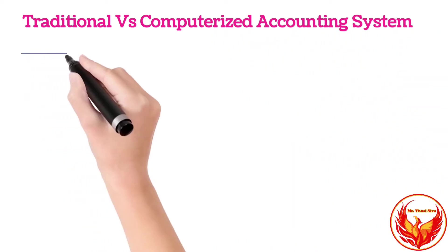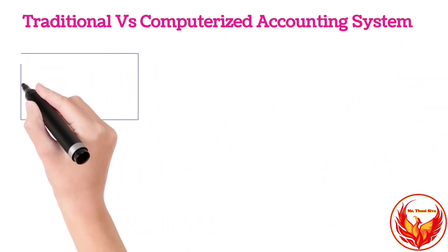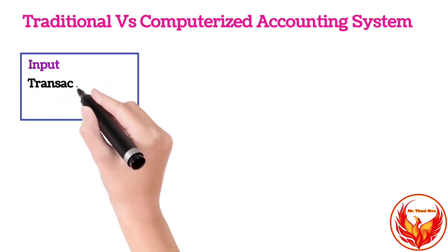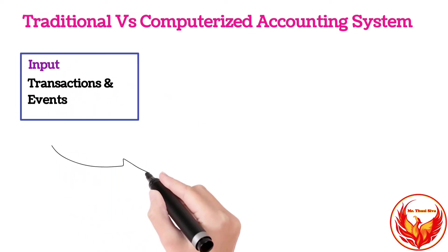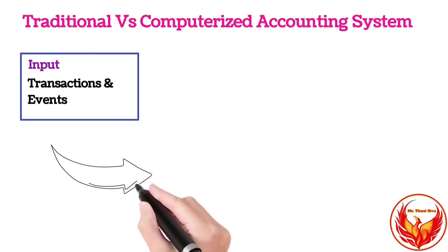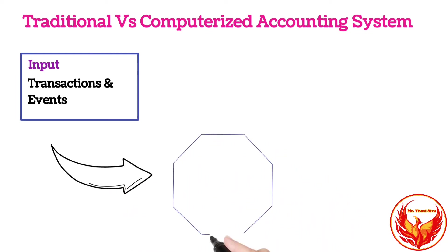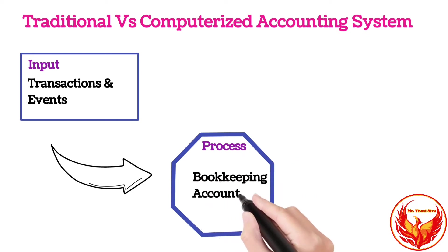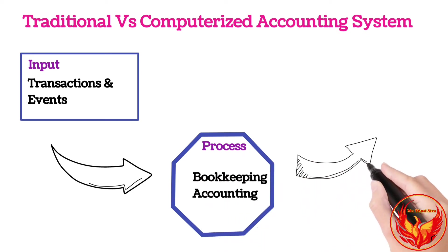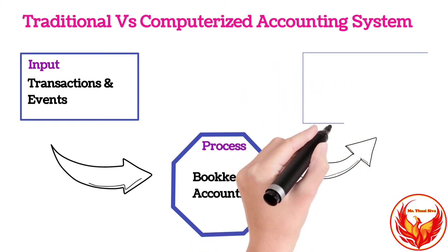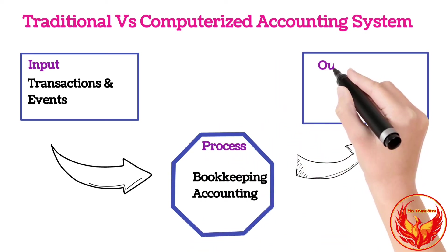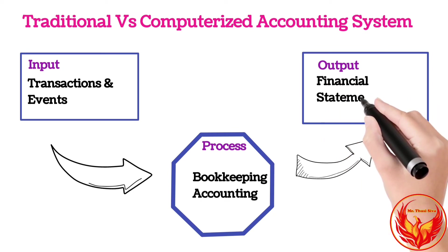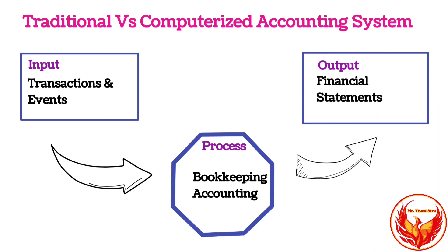When we compare traditional or manual accounting with computerized accounting, both are basically the same in terms of accounting processes. Both follow input, processing, and output stages. On the input stage, we register data based on transactions and events in physical documents. In manual accounting, physical documents are ledgers and cash books. In computer-based accounting, data are recorded electronically.